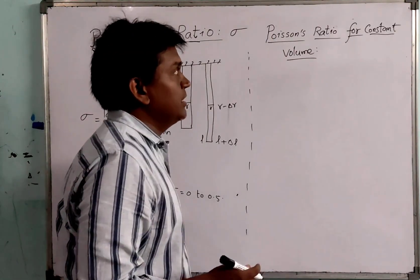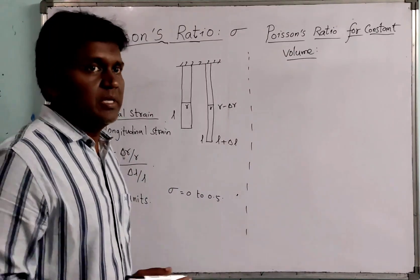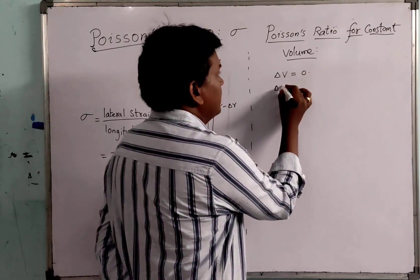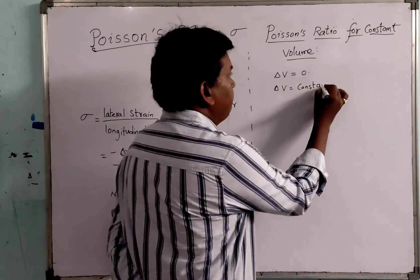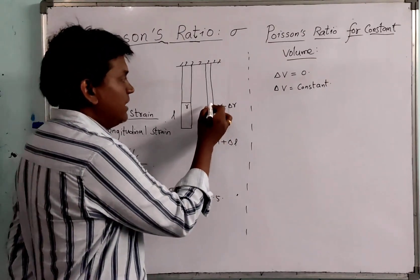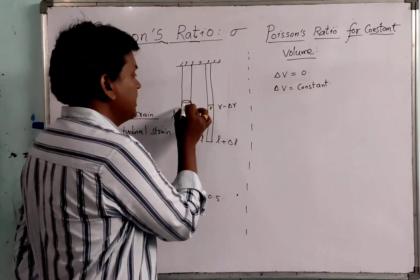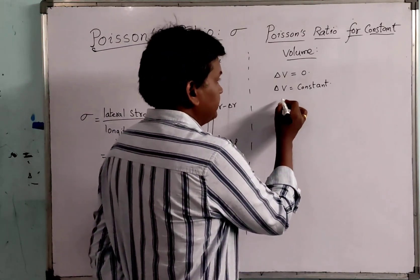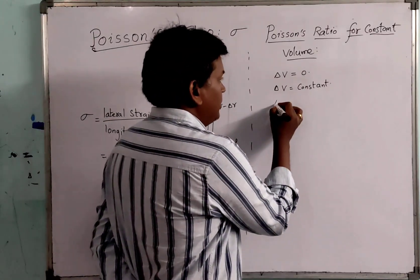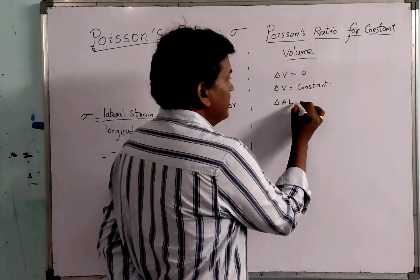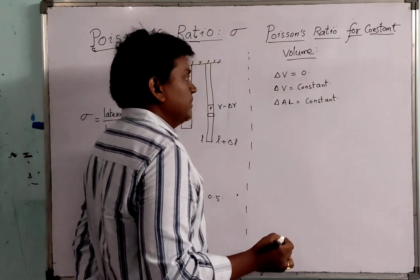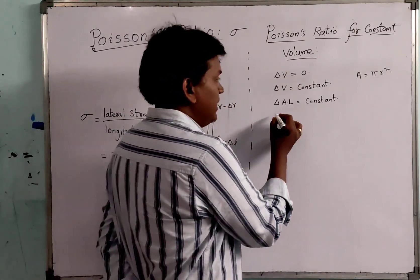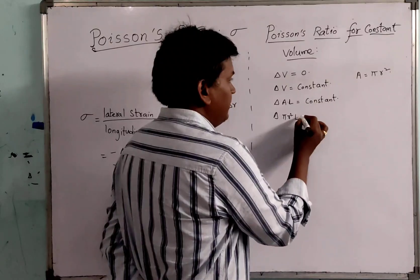Now, if you consider Poisson's Ratio for constant volume, since we are saying that volume is constant, the change in volume delta V equals zero. Considering the wire, it has an area of cross section, and volume is area into length. So the change in area into length is constant. We know that area A equals pi R squared, so delta of pi R squared L equals zero.